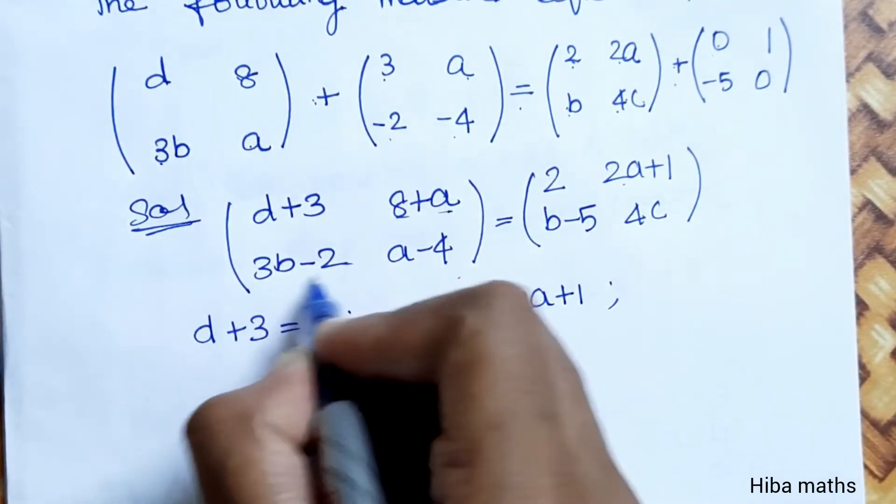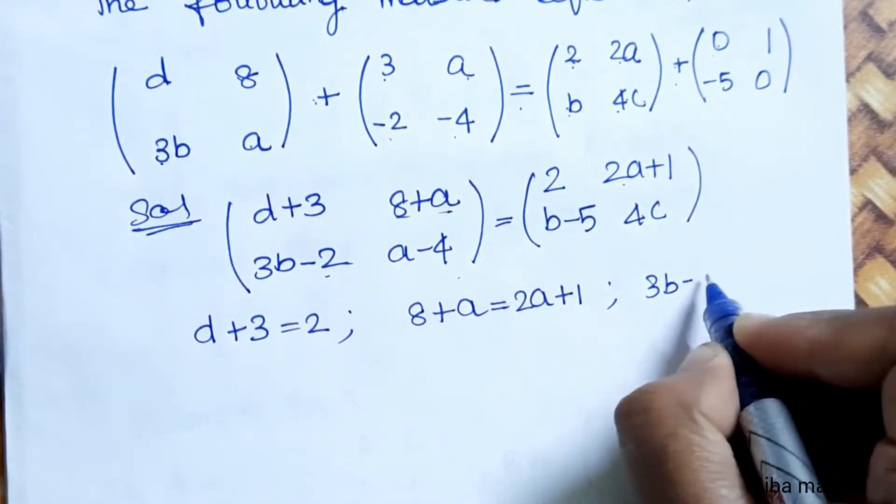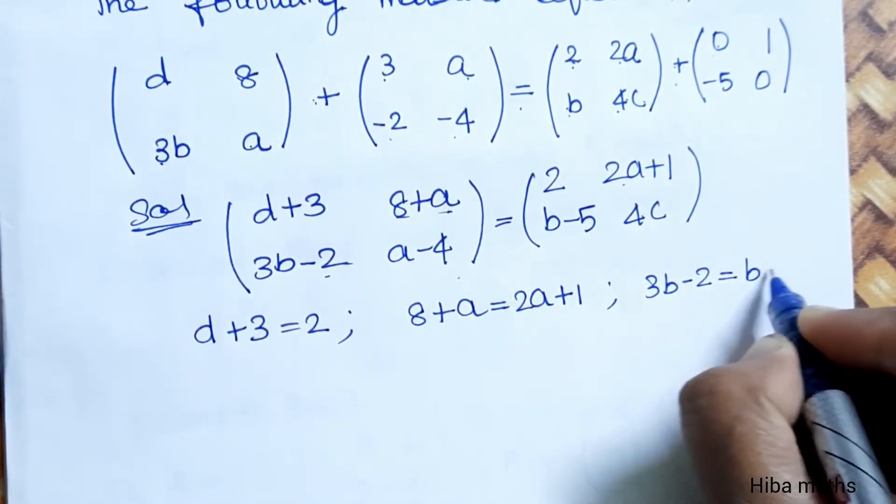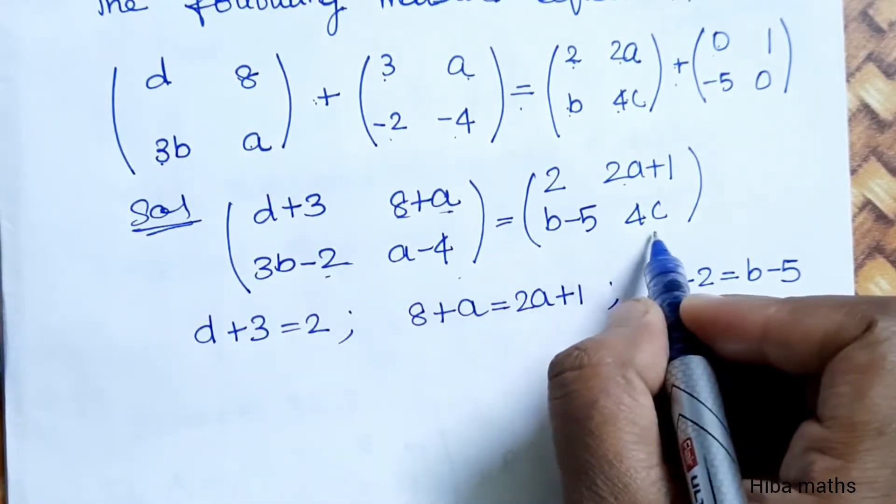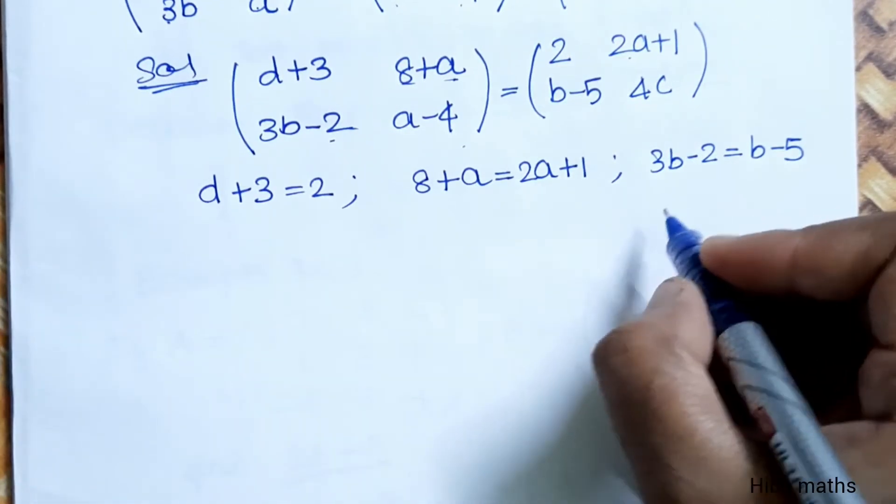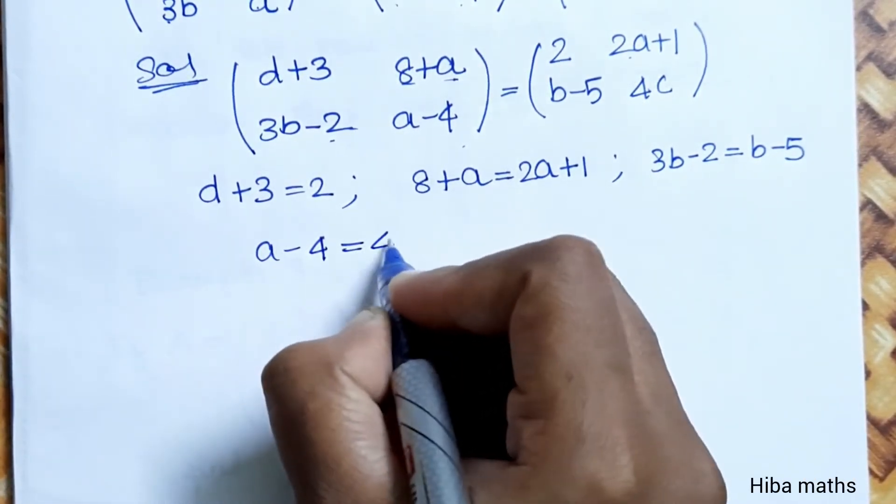Second row, first column. Second row, first column. 3B minus 2 is equal to B minus 5. And the last term, A minus 4 equal to 4C. That is, this row, A minus 4 equal to 4C.